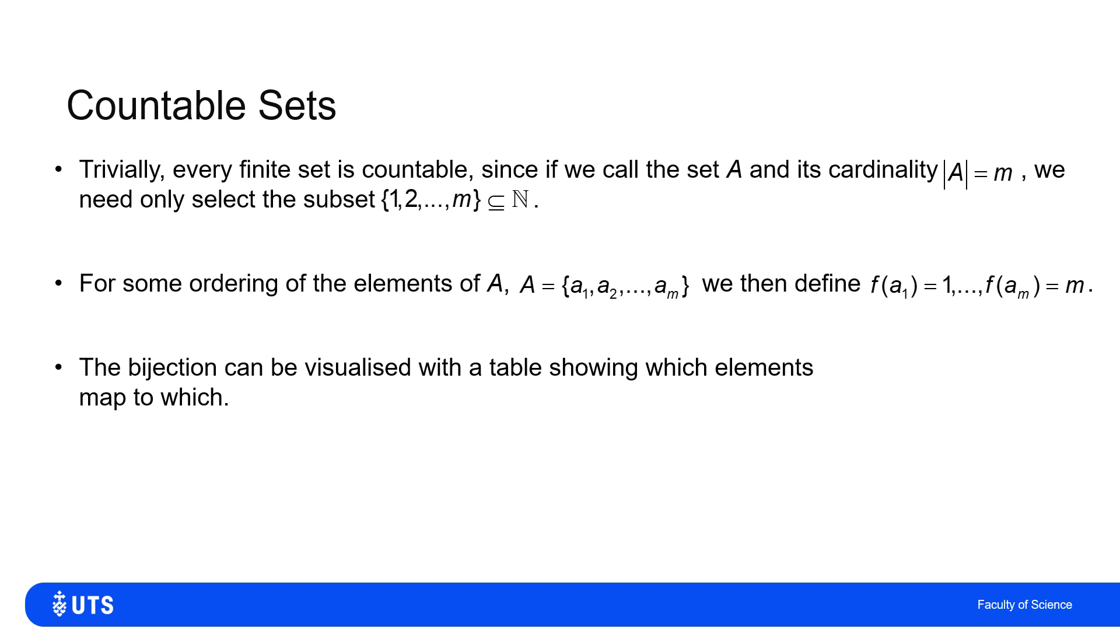Now that is clearly a bijection, because each element a₁ maps to a unique one in the output set, 1; a₂ to 2, a₃ to 3, a₄ to 4, and aₘ to m. And every element in that output set, which is a subset of the natural numbers, is mapped to by exactly one element of A.